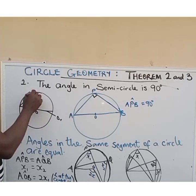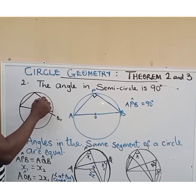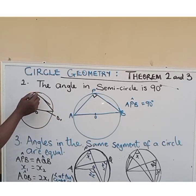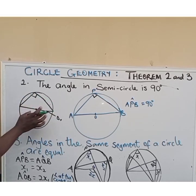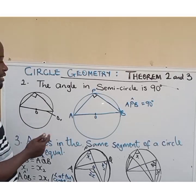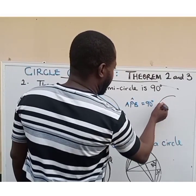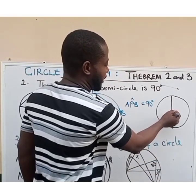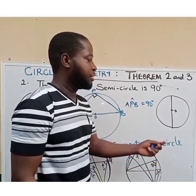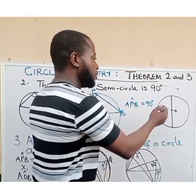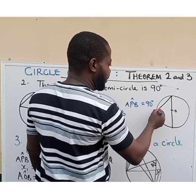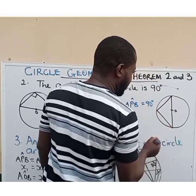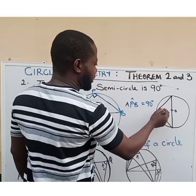Any angle that forms in these parts is going to be 90 degrees. This part is called the semicircle. The diameter has divided the circle into two equal parts — this is the semicircle and this is the other semicircle. So if any angle is formed in this semicircle, that angle is going to be a right angle, which is 90 degrees.